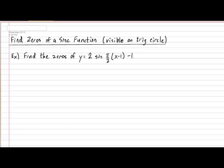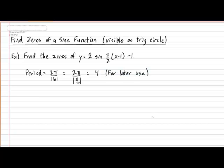Just a reminder that the period means the length of one cycle. The period is given with the formula 2 pi divided by absolute value of b. So in our example, the period will equal 2 pi divided by the absolute value of pi over 2, which gives us a period of 4. This means that whenever we find the zeros, the zeros will repeat themselves every 4 radians. This will be used later.